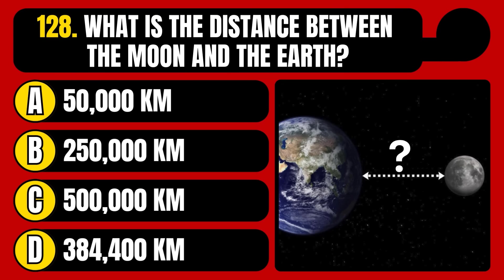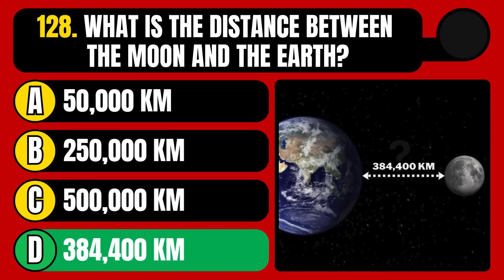What is the distance between the moon and the earth? 50,000 kilometers, 250,000 kilometers, 500,000 kilometers, or 384,400 kilometers? The correct answer is option D, 384,400 kilometers.